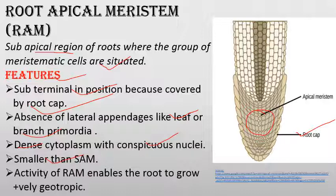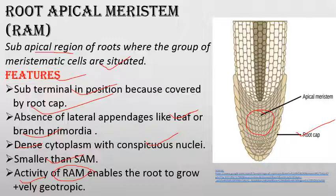The activity of the RAM — root apical meristem — enables the root to grow. As a result of this apical meristem activity, roots are mostly positively geotropic, meaning they move towards the earth ('geo' means earth, 'tropic' means movement), and negatively phototropic.